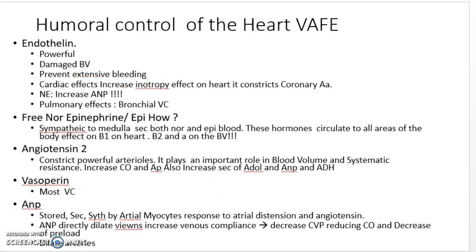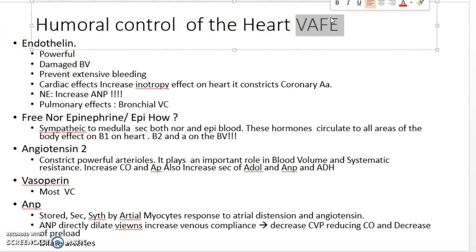Now let's move on to humoral effects. Everything in humoral control is a vasodilator except the vasoconstrictors, which are remembered by the acronym VAEF: V is vasopressin — the main one — A is the angiotensin system, E is endothelin, and F is free norepinephrine and epinephrine.